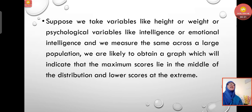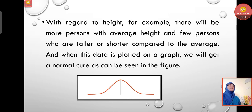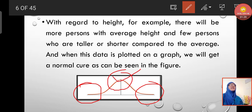Let us understand the main concept of normal probability curve with an example. Suppose we take variables like height or weight, or psychological variables like intelligence or emotional intelligence, and measure them across a large population. We are likely to obtain a graph showing maximum scores in the middle and lower scores at the extremes. For example, there will be more persons with average height and fewer persons who are taller or shorter. When this data is plotted on a graph, we get a normal curve.